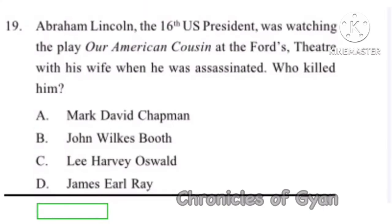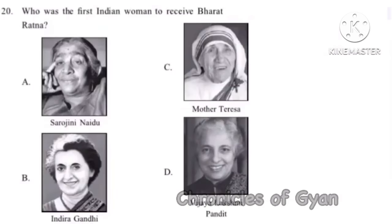Question 19: Abraham Lincoln, the 16th US president, was watching the play 'Our American Cousin' at Ford's Theatre with his wife when he was assassinated. Who killed him? The correct option is Option B, John Wilkes Booth.